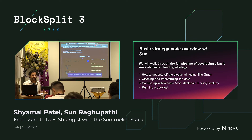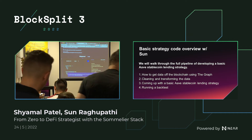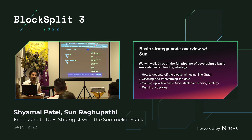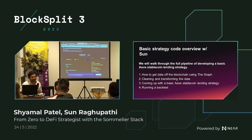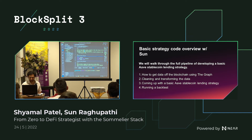The Graph is a protocol for indexing the blockchain. In its native state, the blockchain is very hard to process — it's a series of blocks with transactions, and extracting specific information or tracking state over time is complex. The Graph automates this in a decentralized way using GraphQL. Different protocols write subgraphs, which are APIs that let you query specific information. We're going to use the Aave subgraph, which gives you deposit events, swap information, and other data.